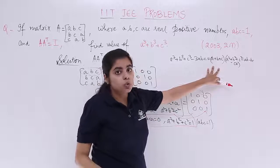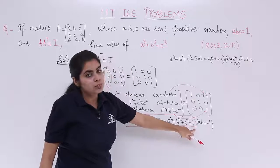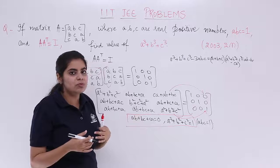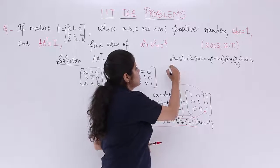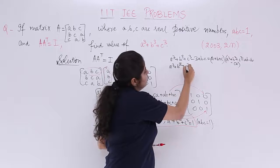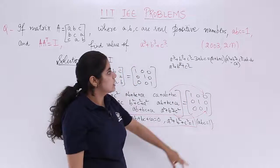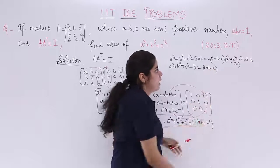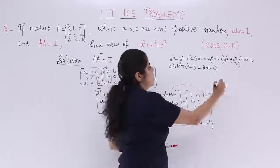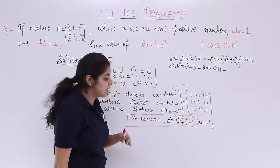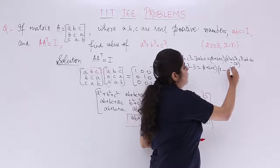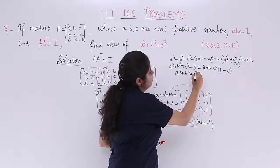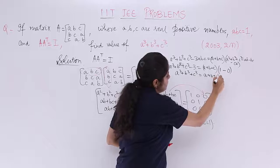Now, A + B + C is unknown. A² + B² + C² = 1 is known. AB + BC + CA = 0 is known. Substituting: A³ + B³ + C³ − 3(1) = (A + B + C)(1 − 0). So A³ + B³ + C³ − 3 = (A + B + C)(1) = A + B + C. We need the value of A + B + C.